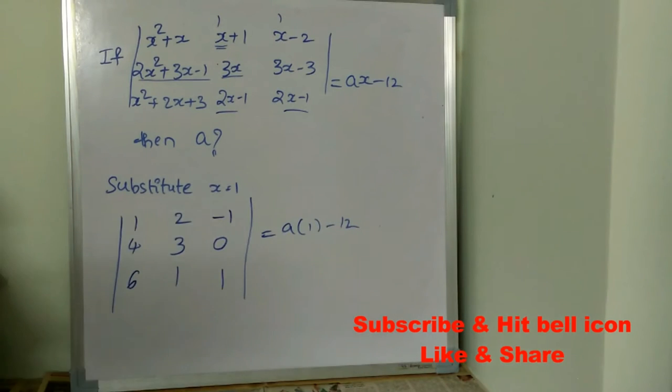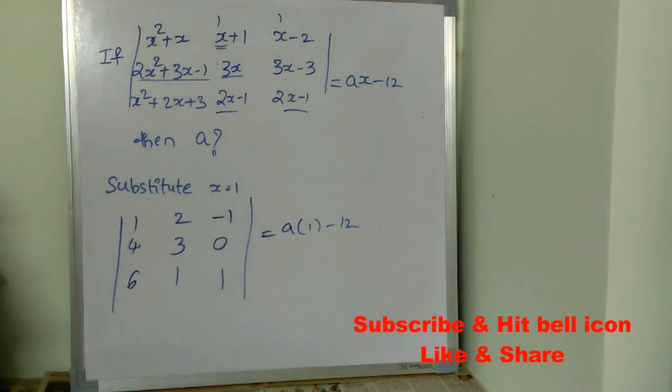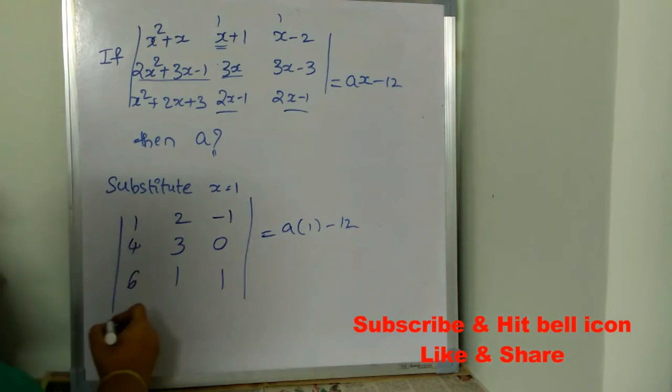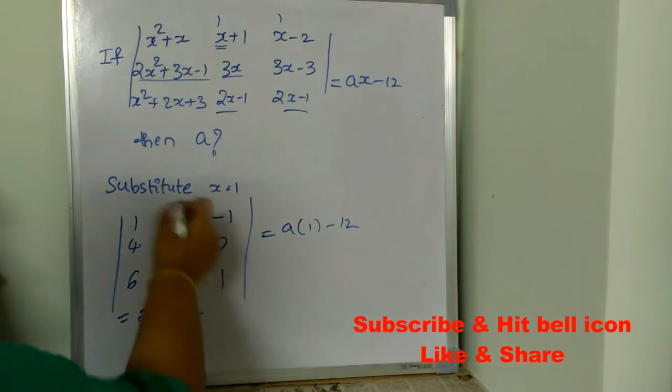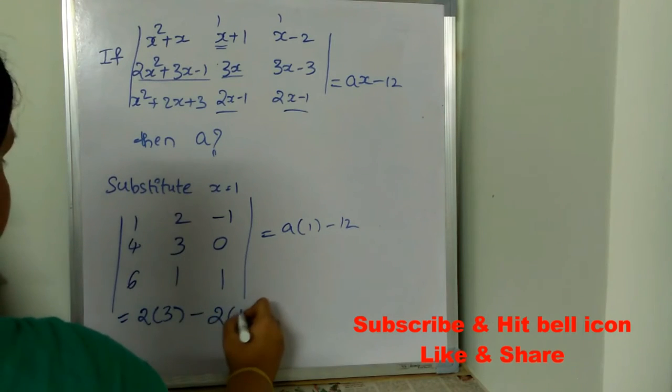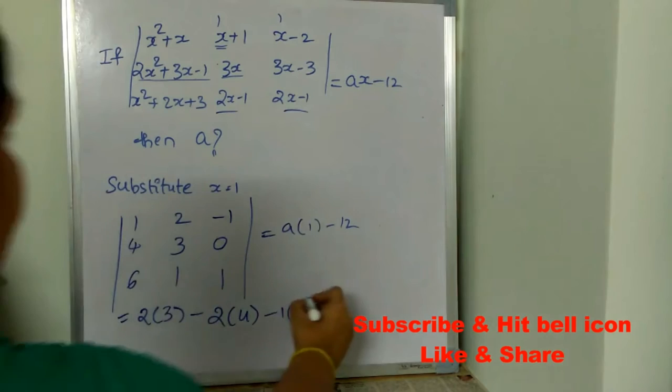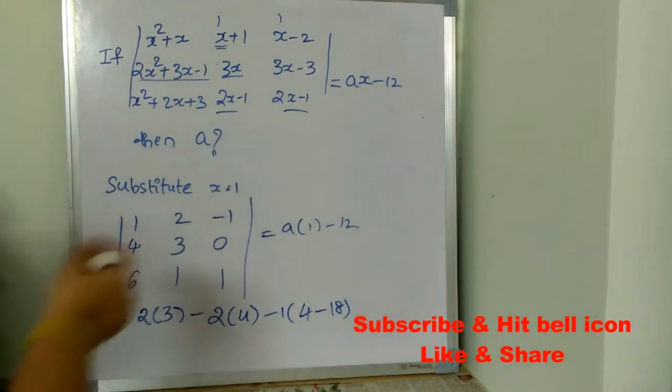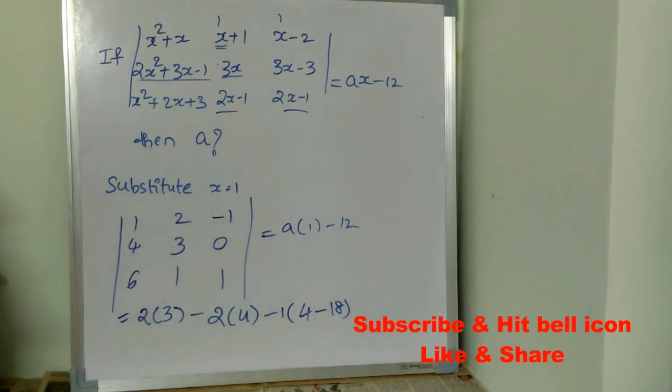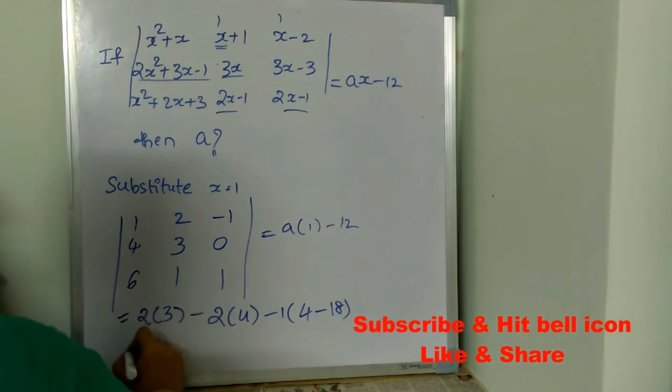Is equal to A into 1 minus 12. Just expand the values which you got in the LHS side. After expanding this, we will be getting 2 into 3 is 2 into 4 minus 1, 4 minus 18. We are just expanding this matrix. After solving this equation, we will be getting answer as 12.